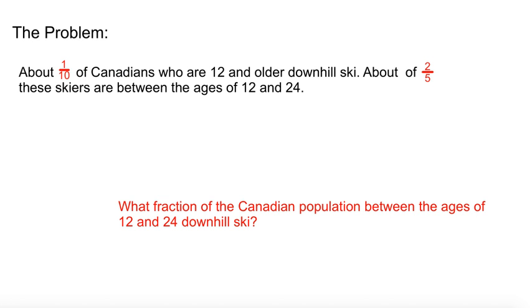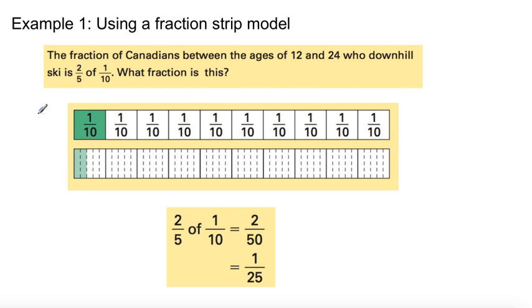First example, we've been doing this using a fraction strip model. Here's the question again. We're going to be working this question out using a fraction strip model. So it says that one-tenth of Canadians downhill ski, two-fifths are between 12 and 24. So here's one-tenth, here's the fraction strip for one-tenth. Now can you go lower than one-tenth? Well yes you can, you can break up this fraction strip into smaller portions.